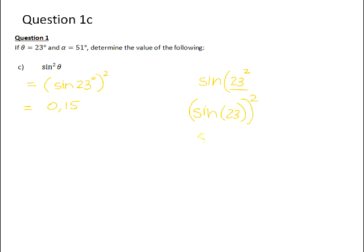or if you are working with a Casio calculator, if you punch in sine of 23, close the bracket, and then put the squared in, it will square the ratio sine of 23. So you just need to be careful how you input it into your calculator.